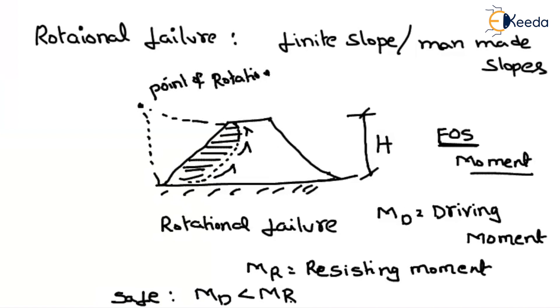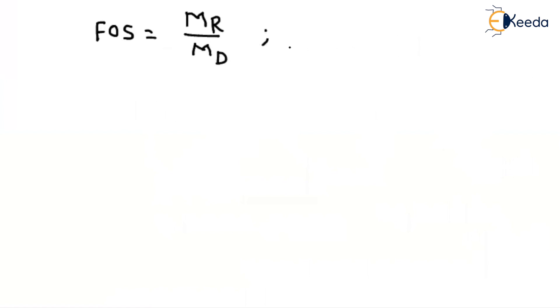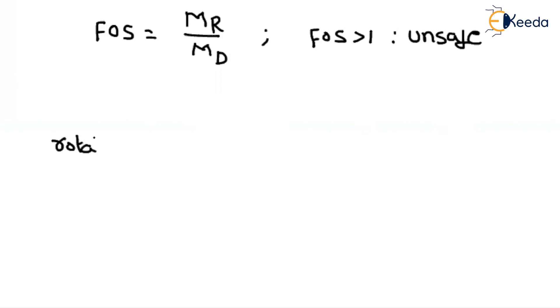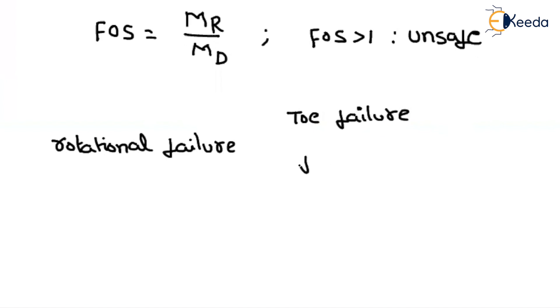Once your driving moment is more than the resisting moment, the slope will fail. The factor of safety is nothing but resisting moment divided by driving moment. Just like the previous case, if the factor of safety is greater than 1, the resisting moment is greater than the driving moment and the slope is safe. Under rotational failure, there may be three different sub-types of failure: toe failure, face failure, and base failure.